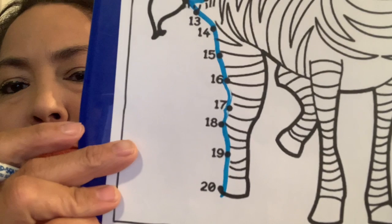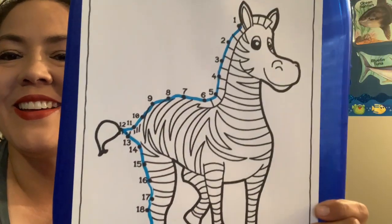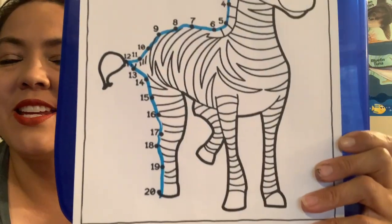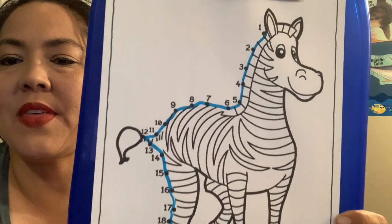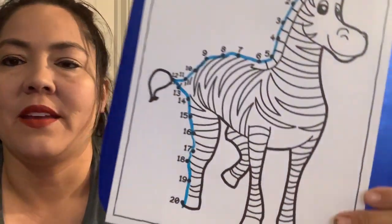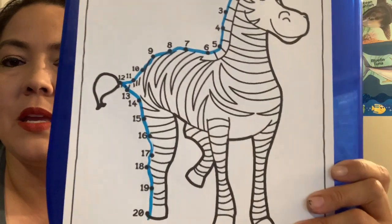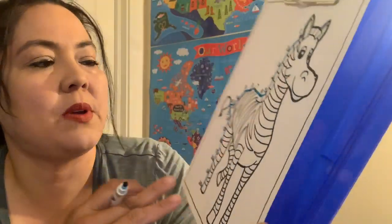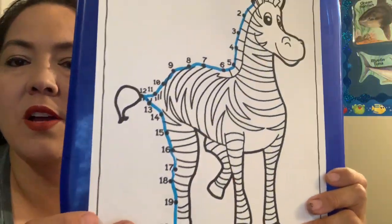Did you guys make it all the way to twenty? Good job. Look, he's so happy that we helped finish him — that is so awesome. Okay, now you can decorate him. You can color in his stripes whatever color you want, since we're all talking about the rainbow of colors this week.